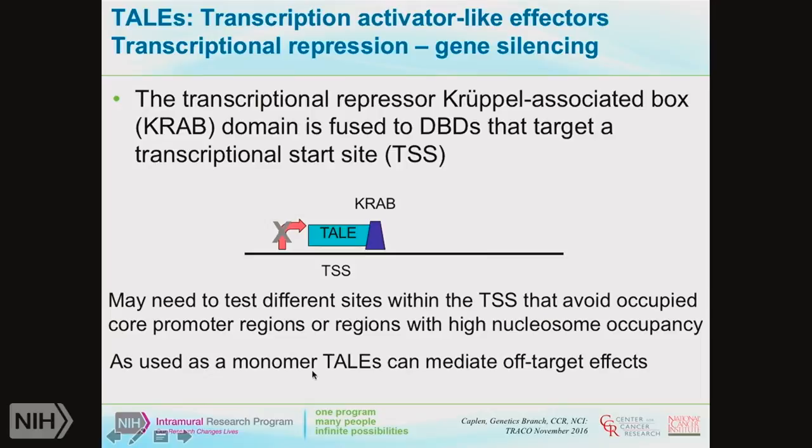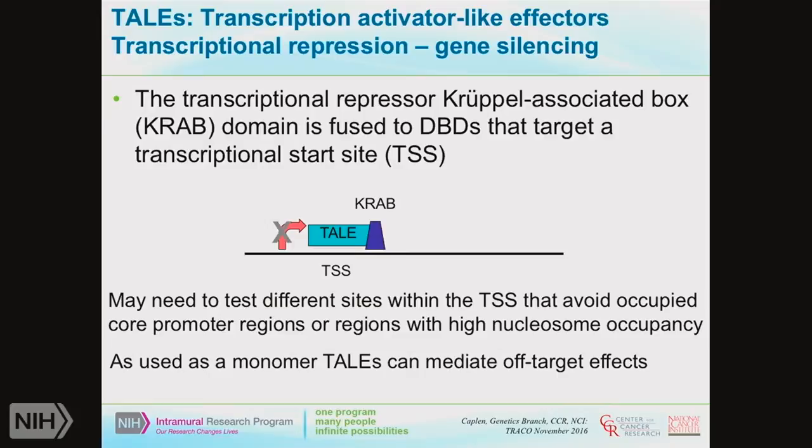There are pros and cons to many of these methods, but a lot of this has obviously changed with the development of functional genomics tools based on CRISPR technology. If you're using a standard Cas9 nuclease, these can be used to generate frameshift and DNA mutations, including permanent knockouts. Usually the guide is done as a single guide RNA. The required information is the whole transcriptome, but you're actually cutting at the genome. If you're using a monomer, the off-target space can be quite large — Cas9 is a very promiscuous enzyme.